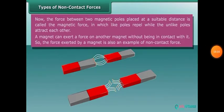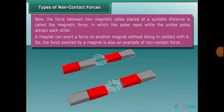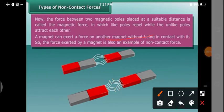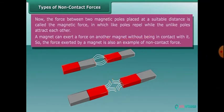We studied magnetic properties last year — whenever like poles come together, they repel each other, and when unlike poles come together, they attract. So there is a non-contact force: nothing is touching anywhere, yet they get attracted. A magnet can exert a force on another magnet without being in contact with it. So the force exerted by a magnet is also an example of non-contact force.